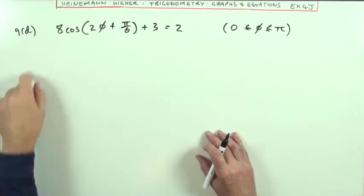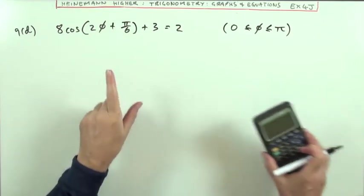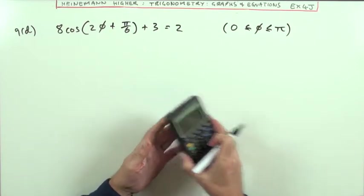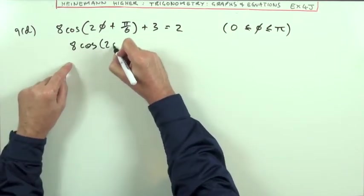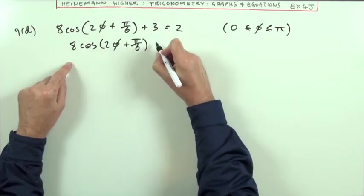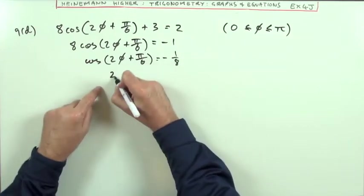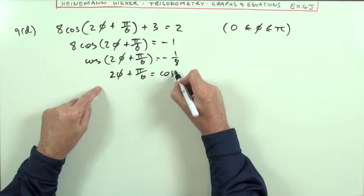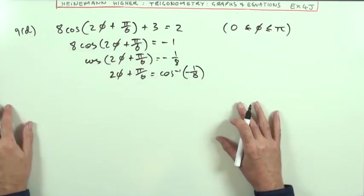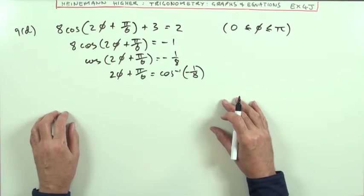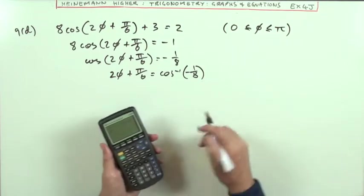For part d, another compound angle in radians. You can translate to degrees, but I'll do this all in radians. Getting rid of the 3 gives 8cos(2φ + π/6) = -1, so cos(2φ + π/6) = -1/8, then 2φ + π/6 is the inverse cos of -1/8. That's not one I recognize—usually radian questions give nice fractions of π, but not this time.